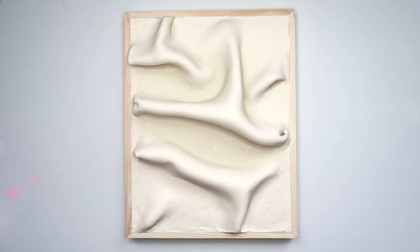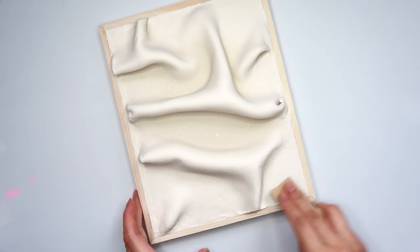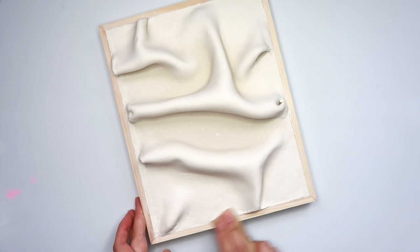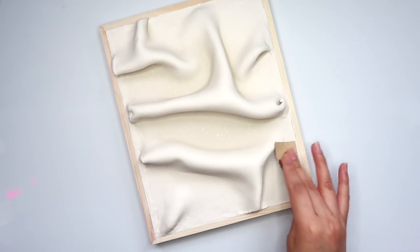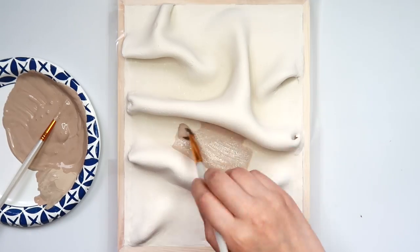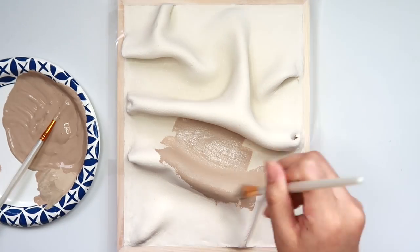So here she is completely dry and I am going to sand her where I added in that extra clay because it needs it. Now I'm going to paint this a taupey brown that I mixed together.